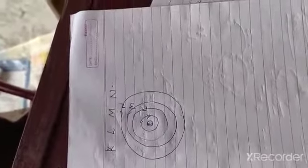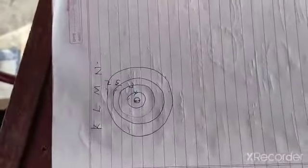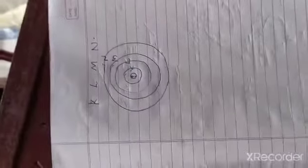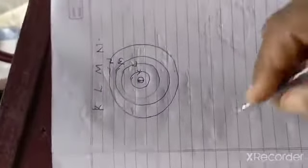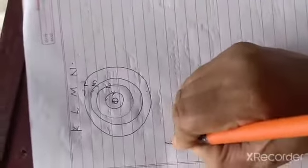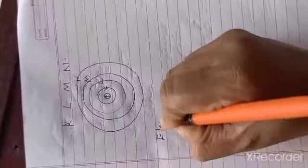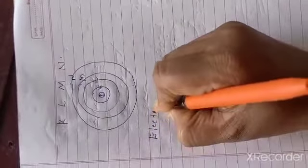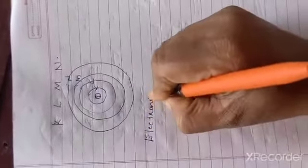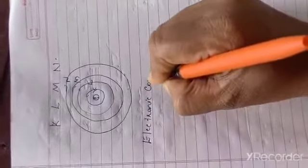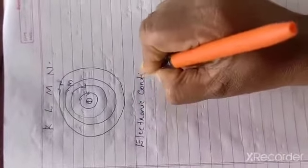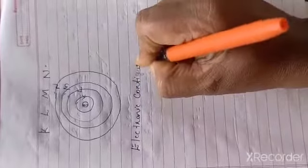The distribution of electrons in shells is known as electronic configuration.